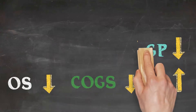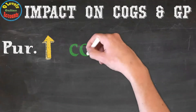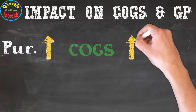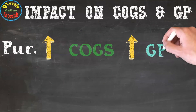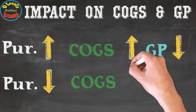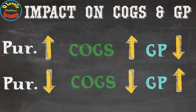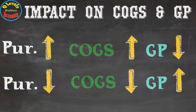Next component — purchases: when purchases increase, cost of goods sold also increases, but gross profit decreases. When purchases decrease, cost of goods sold also decreases, but gross profit increases. Purchases have a direct relationship with cost of goods sold but an indirect relationship with gross profit.